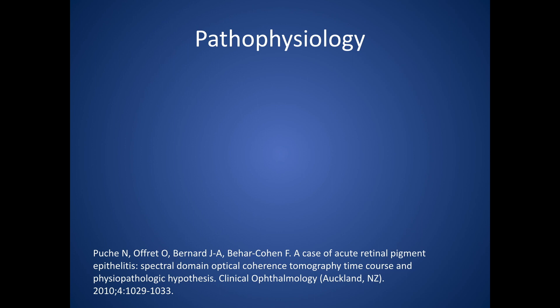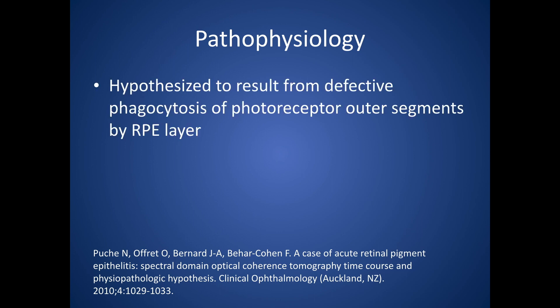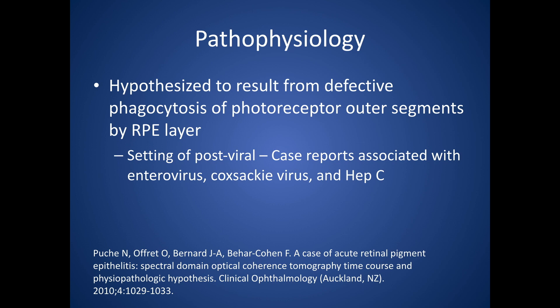The pathophysiology of Kuhnt disease is unclear. It might be due to defective phagocytosis of the photoreceptor outer segments by the RPE layer. Supporting this is that on OCT, the most affected part of the retina is the inner side of the retinal pigment epithelium as well as the photoreceptor layer. The external limiting membrane can also be affected, but to a lesser extent.